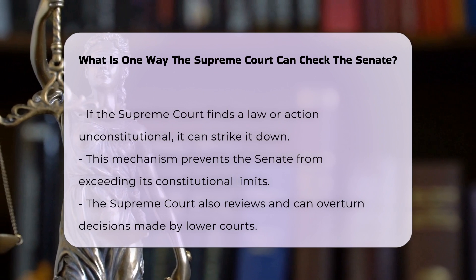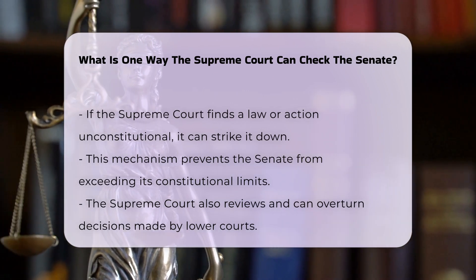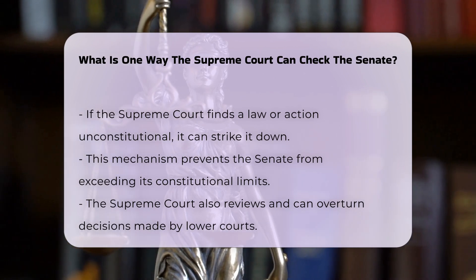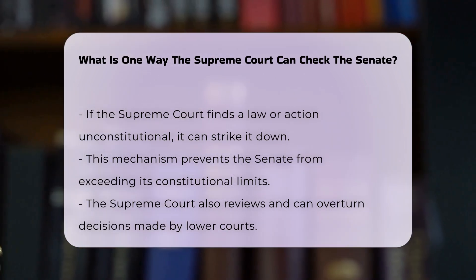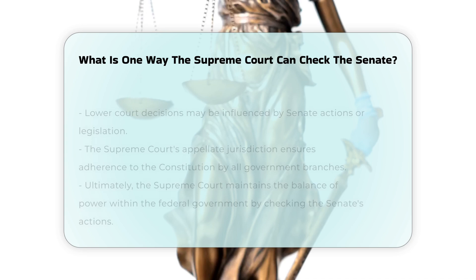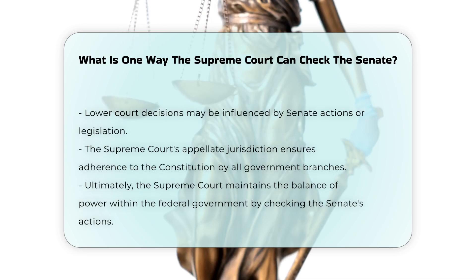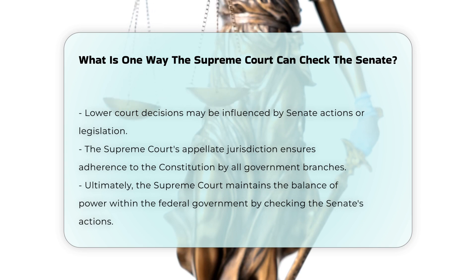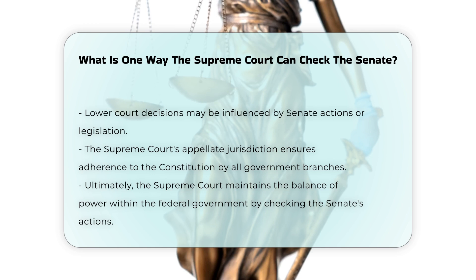Additionally, the Supreme Court can review and overturn decisions made by lower courts, which may have been influenced by Senate actions or legislation. This appellate jurisdiction allows the Supreme Court to ensure that all branches of government, including the Senate, adhere to the Constitution. In summary, the Supreme Court checks the Senate by ensuring that any laws or actions taken by the Senate align with the Constitution, thereby maintaining the balance of power within the federal government.